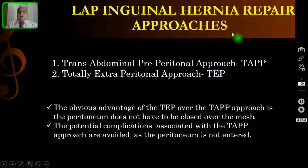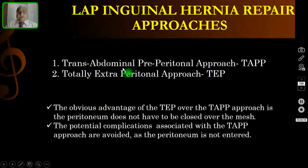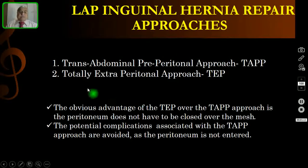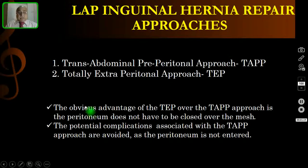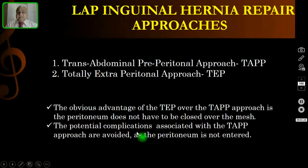The laparoscopic inguinal hernia repair has two approaches. One is the transabdominal preperitoneal approach, known by the acronym TAPP, and the second one is the totally extraperitoneal approach, known by the acronym TEP. The advantage of TEP over TAPP is that the peritoneum need not be covered over the mesh, and the potential complications of opening the peritoneum in TAPP will be avoided in the TEP approach.